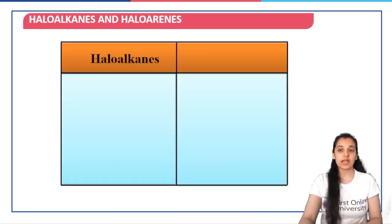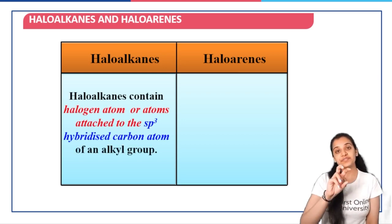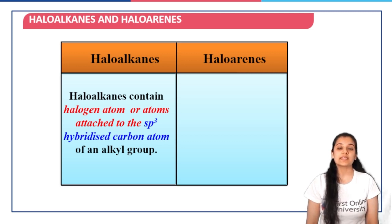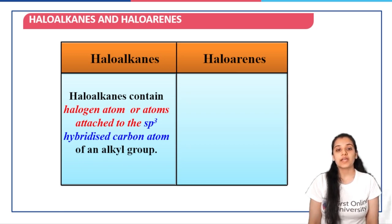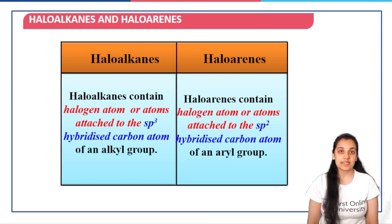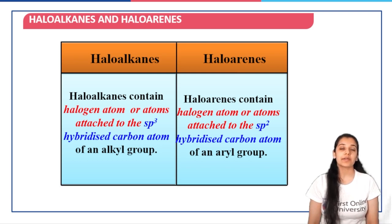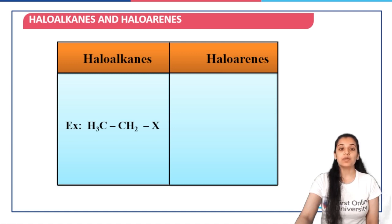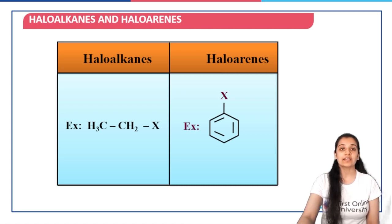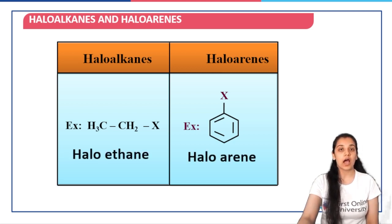Now, looking at the key difference between haloalkanes and haloarenes: haloalkanes contain the halogen atom attached to the sp3 hybridized carbon atom of the alkyl group. Whereas in the case of haloarenes — as in benzene — all carbons are sp2 hybridized, so haloarenes contain the halogen atom attached to the sp2 hybridized carbon atom of an aryl group. For example, CH3CH2X is a haloalkane, and a halogen directly attached to a benzene ring is an example of a haloarene.